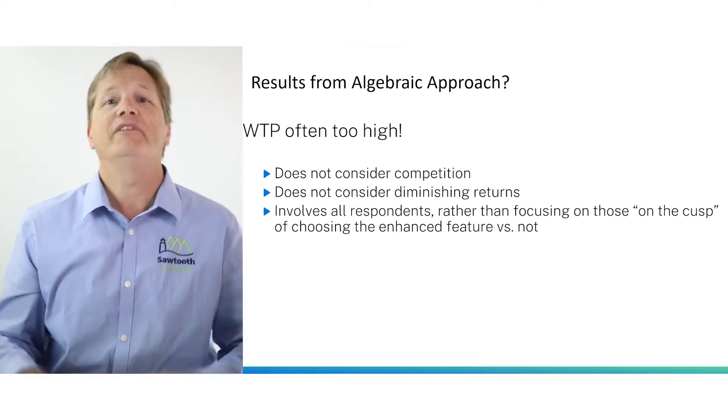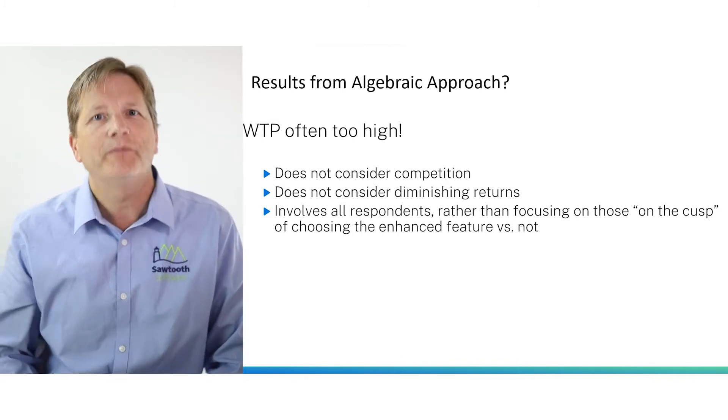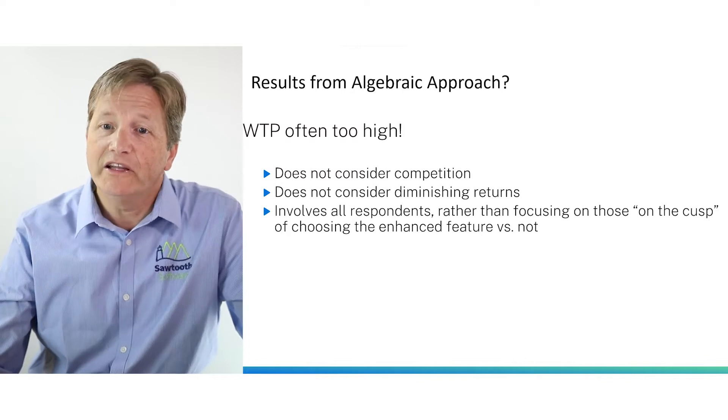This willingness to pay via the algebraic approach is typically too high and not believable because it doesn't consider competition. It assumes that the firm has a monopoly on feature A and that other firms cannot offer it in the marketplace, and that respondents can't also just walk away and say none. It also involves all respondents in the analysis rather than focusing on respondents on the cusp of choosing your product versus other competitive offerings.